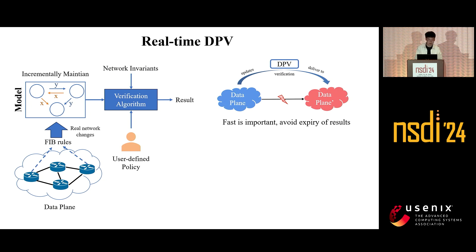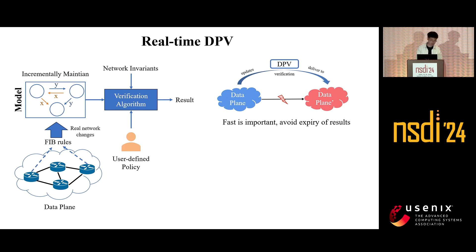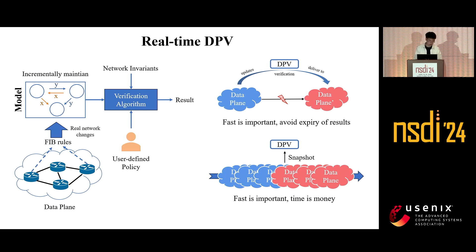There are two ways for DPV deployment in real networks. First, it's based on rule hijack — only those data plane updates that pass DPV verification can actually be delivered to physical devices. In this case, real-time DPV avoids expiration of results, as the data plane state may undergo unexpected changes during verification. Beyond rule hijack, DPV can also work with network snapshots, where the data plane periodically provides snapshots for verification. In this case, DPV's real-time speed helps minimize losses — after all, time is money.